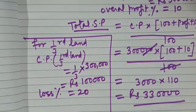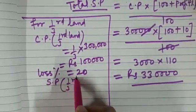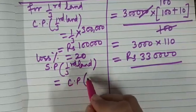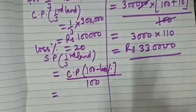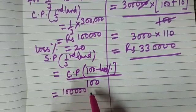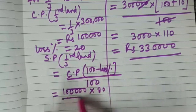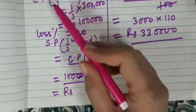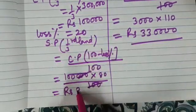Because it is given that he sells one third of the land at a loss of 20 percent, can we calculate selling price of one third land? SP of one third land, that will be CP into 100 minus loss percent divided by 100 which is equal to 1 lakh into 100 minus 20. So, 100 minus 20 is 80. Simplify this. We get CP of one third land as 1 lakh and SP of one third land as 80,000.